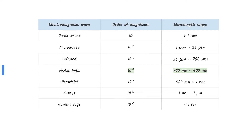Here are the order of magnitude of the electromagnetic spectrum. The wavelength range of visible light is between 400 to 700 nanometers. Be sure to have this memorized. Therefore, the wavelength of the photon must be between 400 and 700 nanometers since it is visible light. The answer is 500 nanometers.